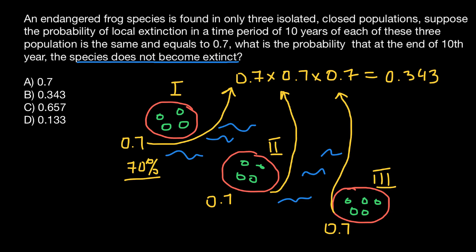And as you see, we have such an answer, answer B. But again, we have found probability that this species would be gone, would be extinct. So what is the probability that it is not going to go extinct? Very easy, 1 minus 0.343 and the answer would be 0.657. And as you see, this is answer C.